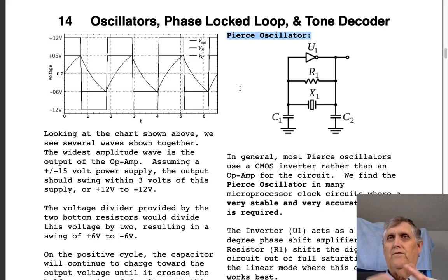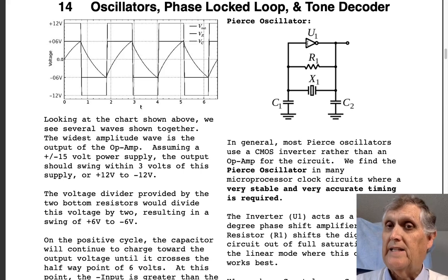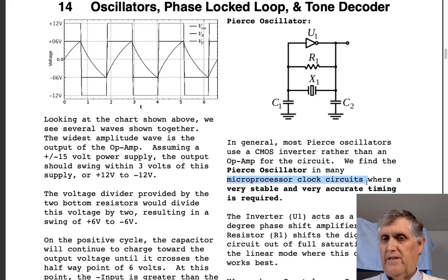Alright. Last thing for this segment, the Pierce oscillator. Now, most Pierce oscillators will use a CMOS inverter rather than an op amp for the circuit. Could be done with an op amp, but it's almost always this little CMOS inverter. I know U1 doesn't say CMOS, but that is definitely the symbol for an inverter. Pierce oscillators are found in many of the clock circuits, especially microprocessors. And really it's where you need very stable and accurate timing.